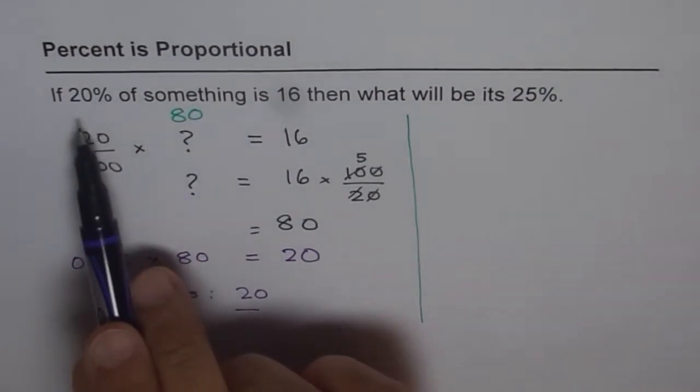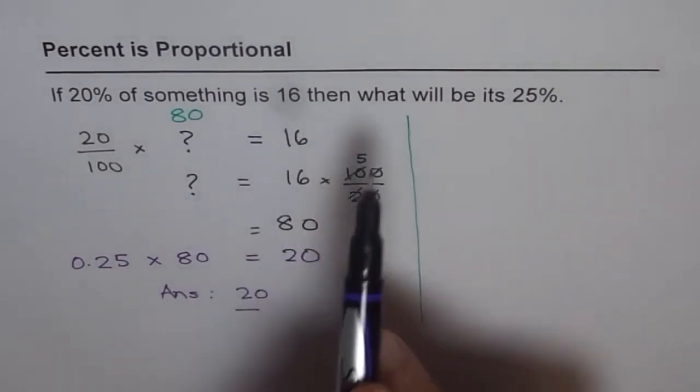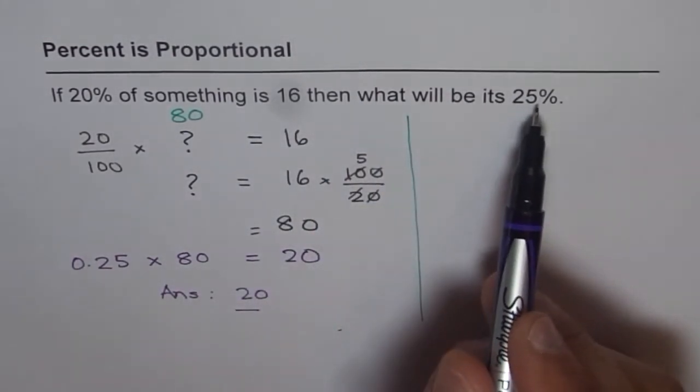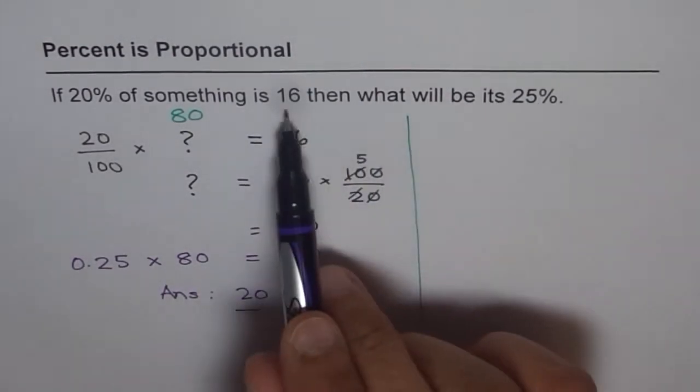It says, 20% of something is 16, then what will be 25%? Of course, 25% will be more than 16.